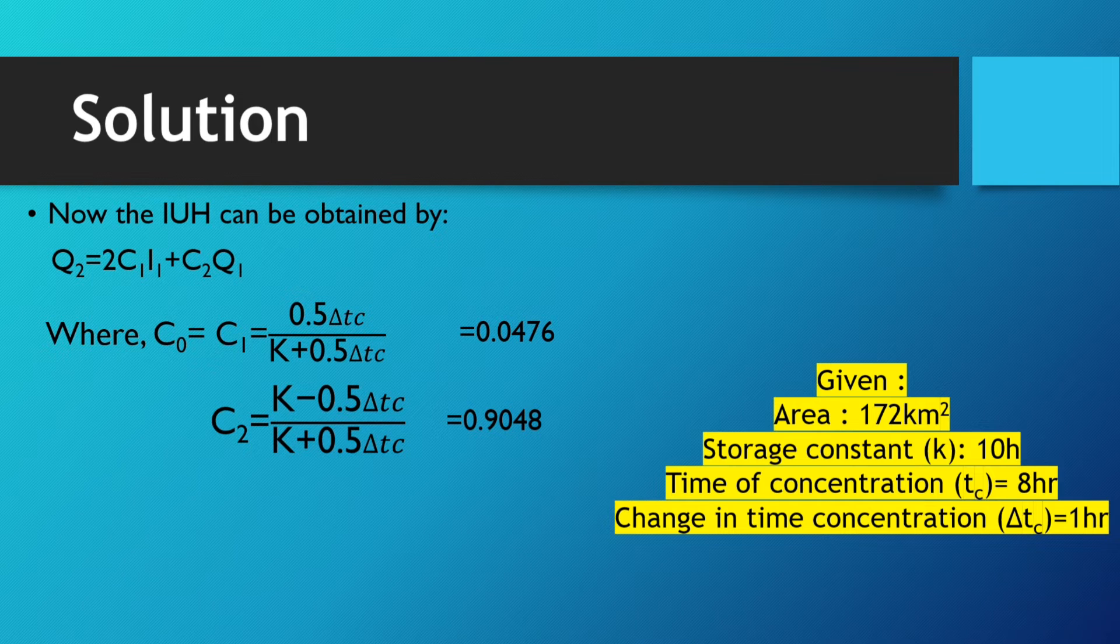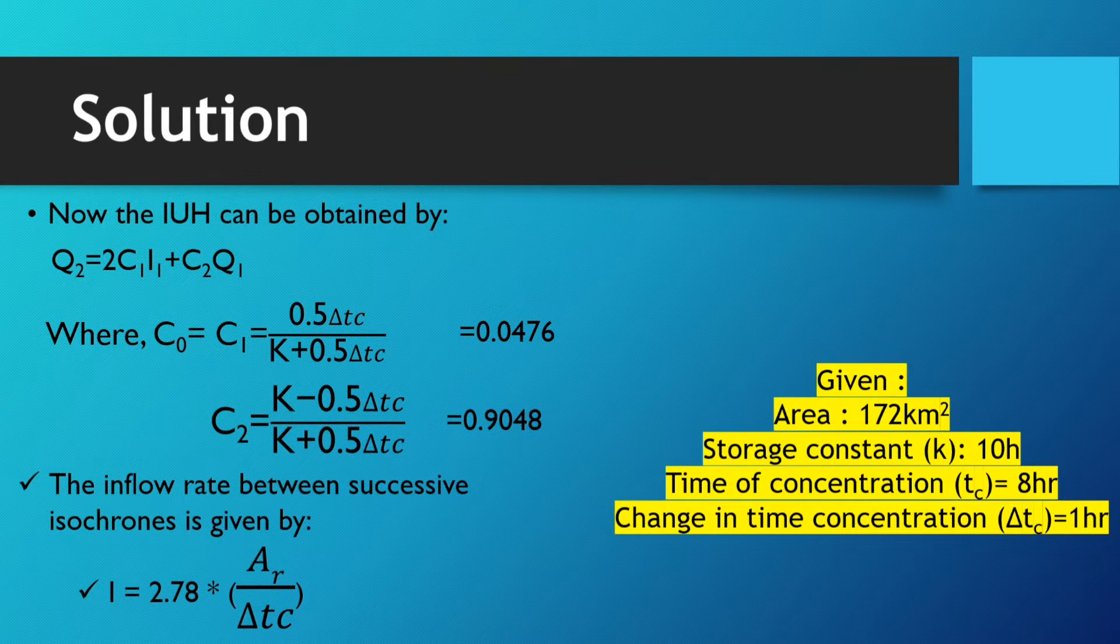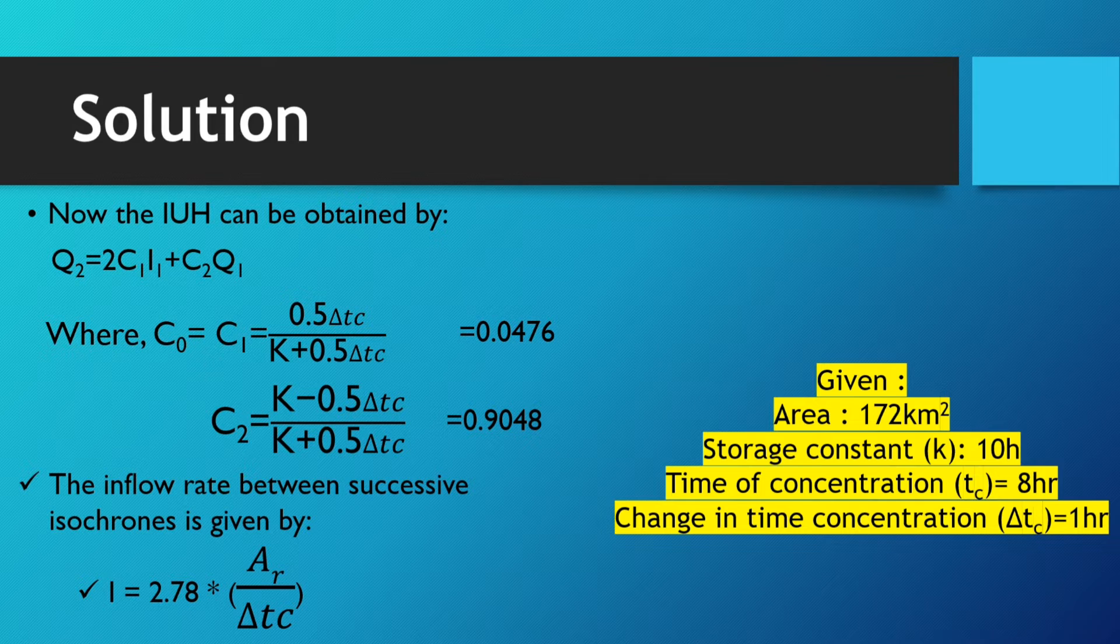After solving the values of C₁ and C₂, we will calculate the inflow rate between successive isochrones as given by I equals 2.78 times AR by ΔTc, where AR means area and ΔTc means change in time concentration.